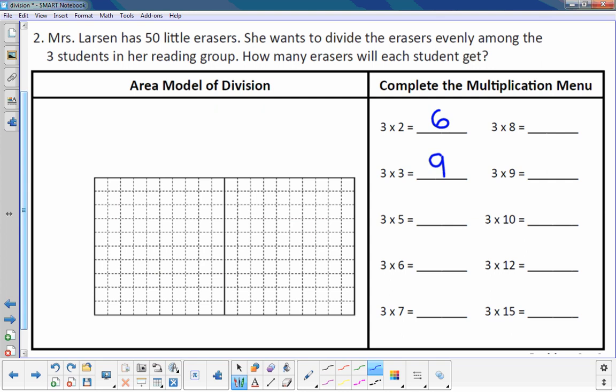Three times two is six. Three times two is six. Three times three is nine. Three times five is 15. 18. 21. 24. 27. 30. 36. 45. I hope I'm right. Sometimes I'm wrong.